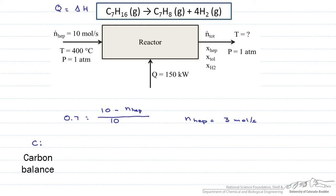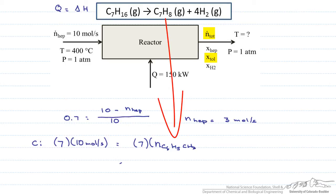Next, we are going to use a carbon balance. We know that there are 7 carbon atoms in N-heptane, and there are 10 moles per second of heptane coming in. This has to equal the 7 carbon atoms in the toluene plus the 7 carbon atoms in the heptane that comes out. This allows us to solve for the toluene which equals 7 moles per second.